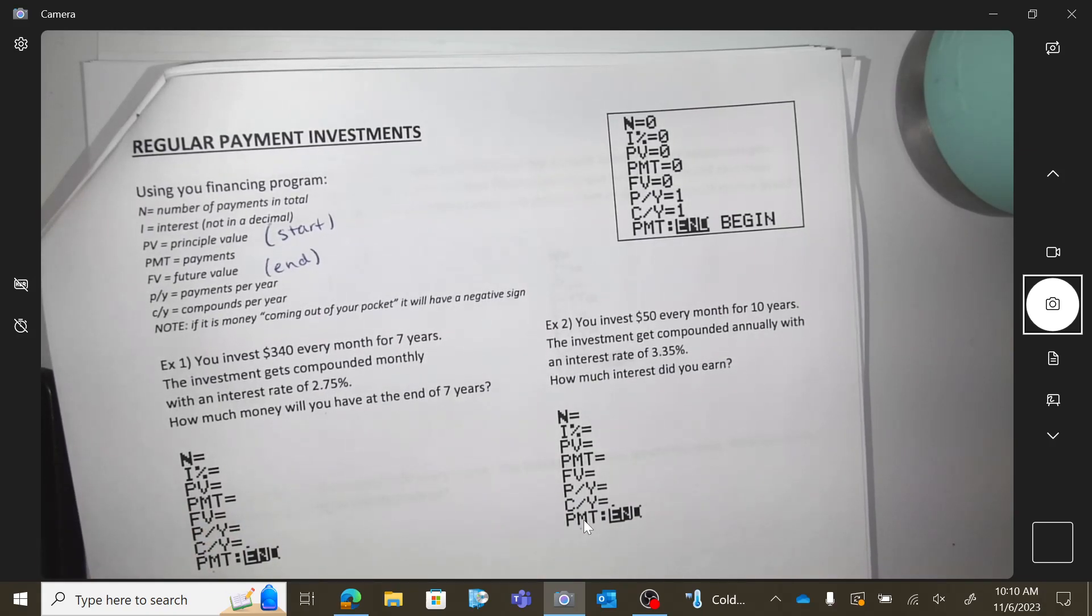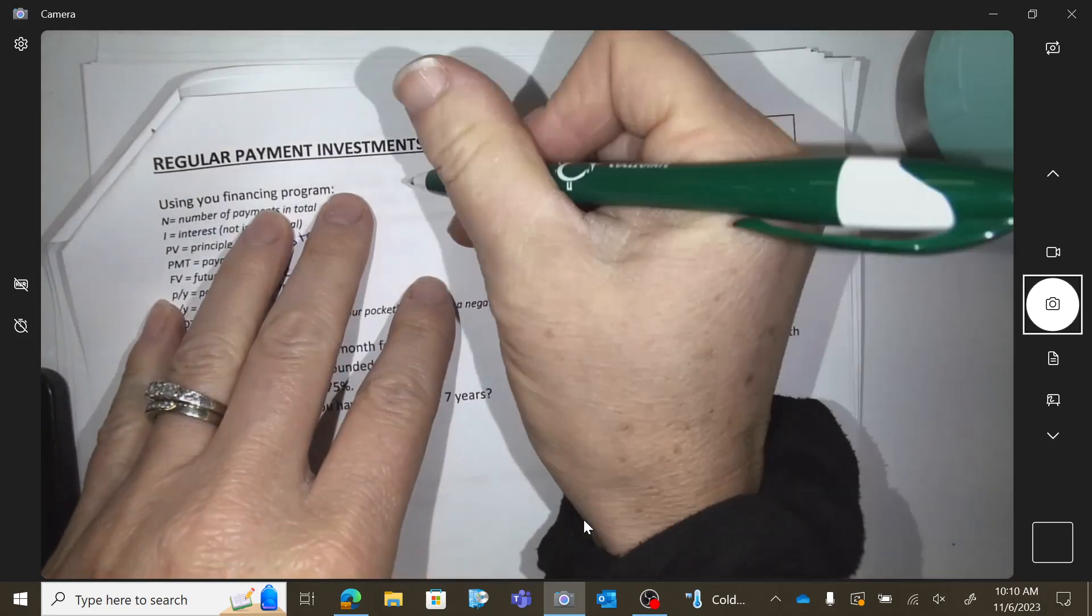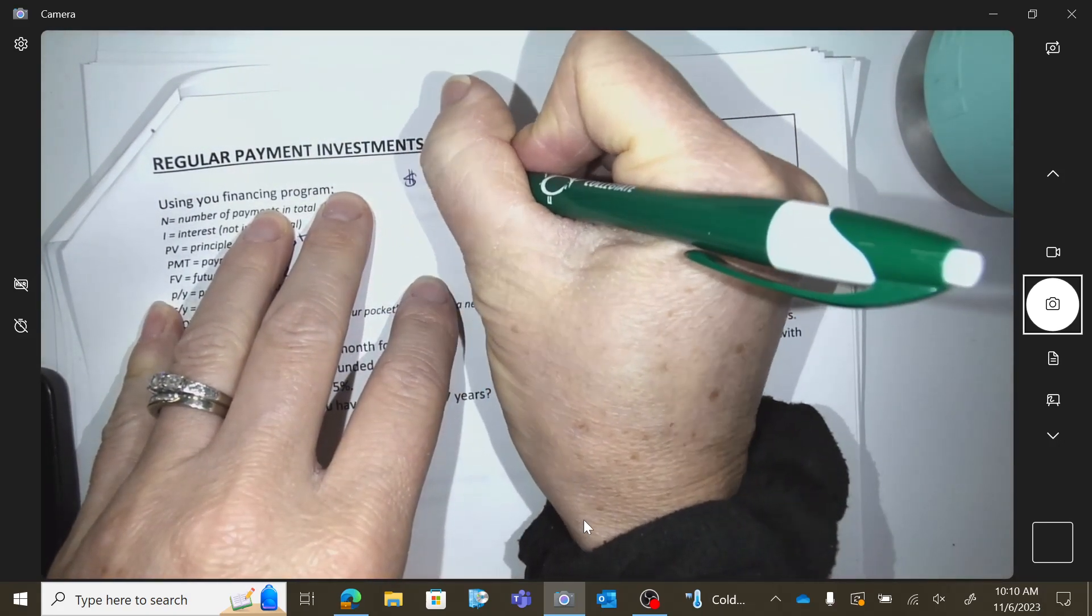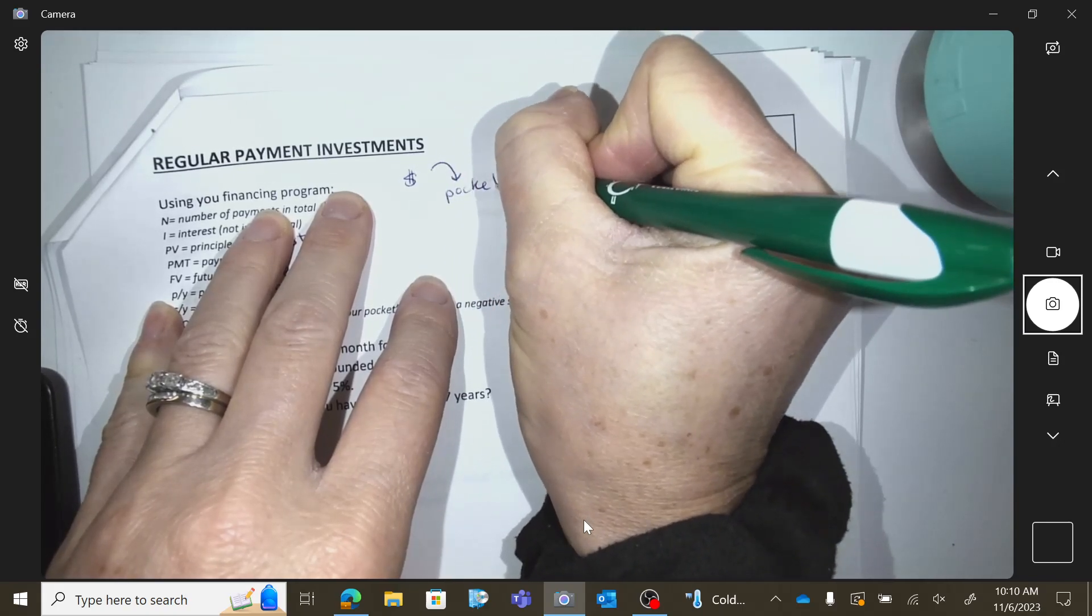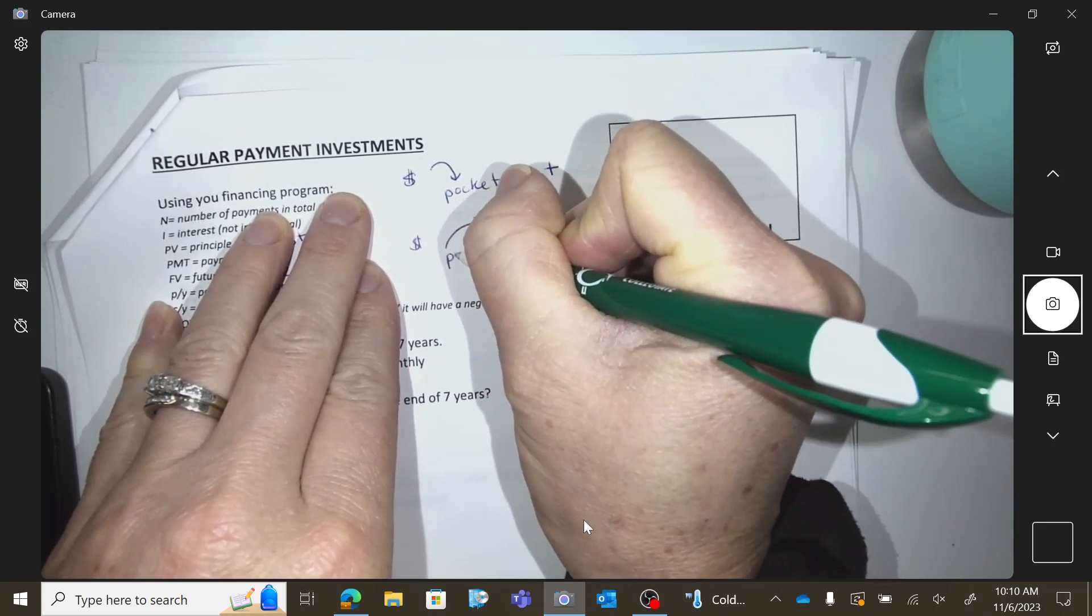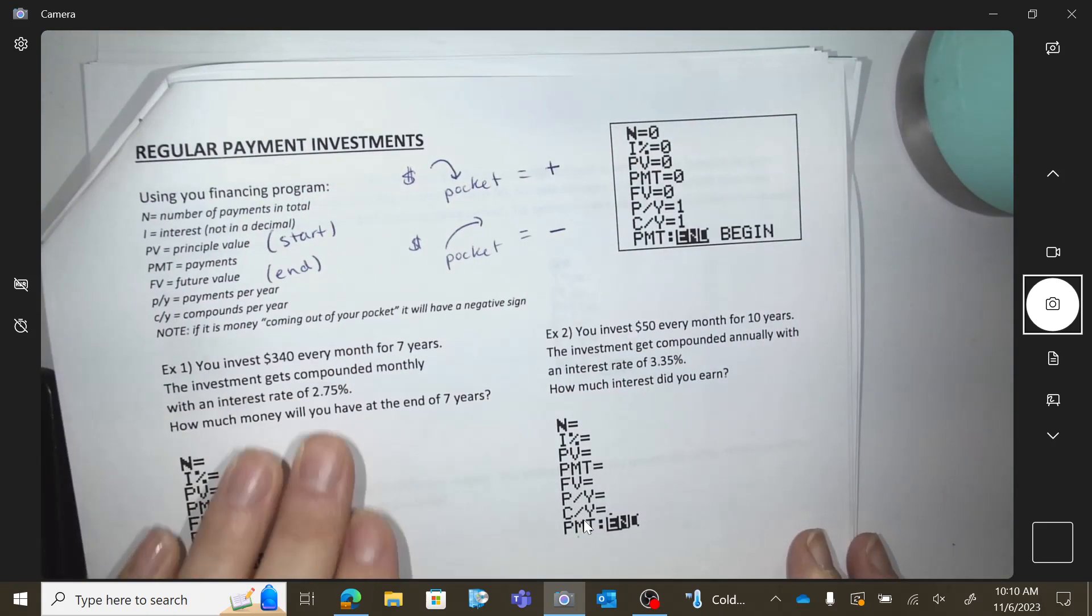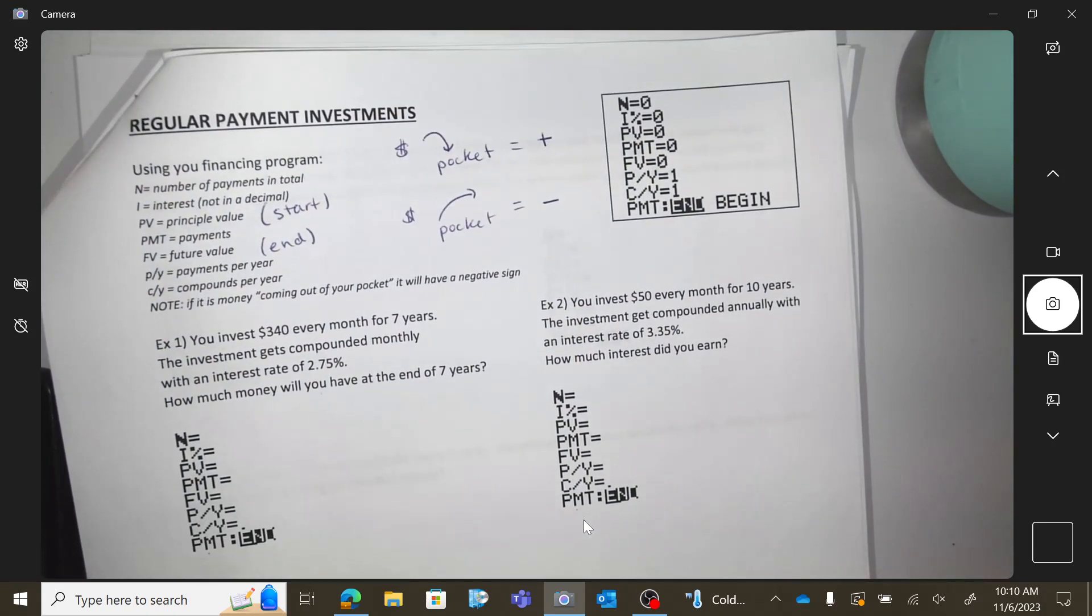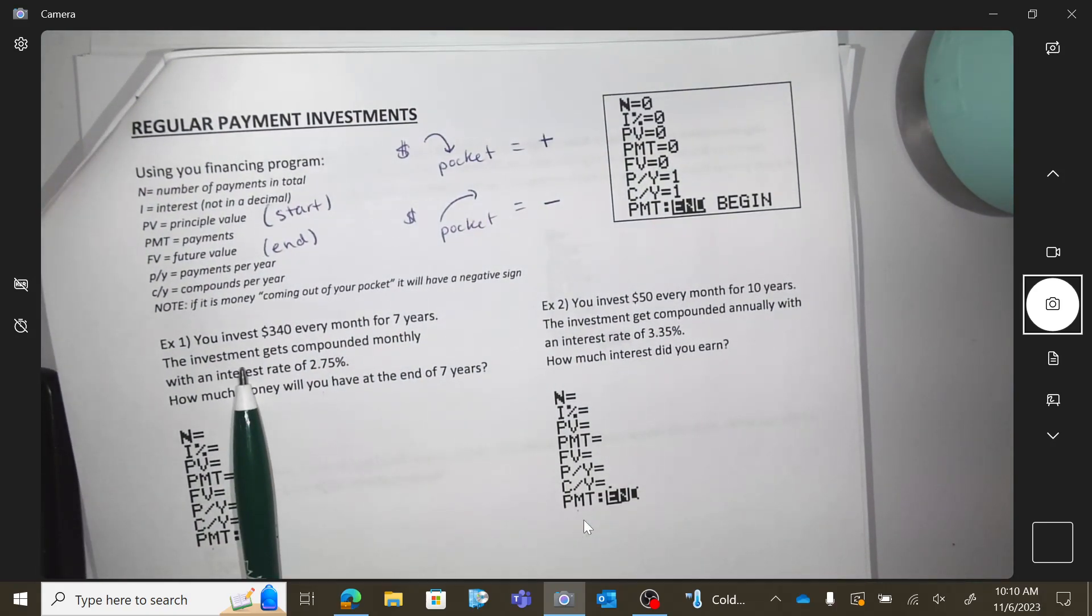Okay, when you use this app, if it's money that's coming into your pocket, it's positive. If it's money that you're spending, it's negative. If it's money that you're receiving, that's a positive thing, and if it's money that you're spending, it's a negative. So you're going to have to think about that during this.